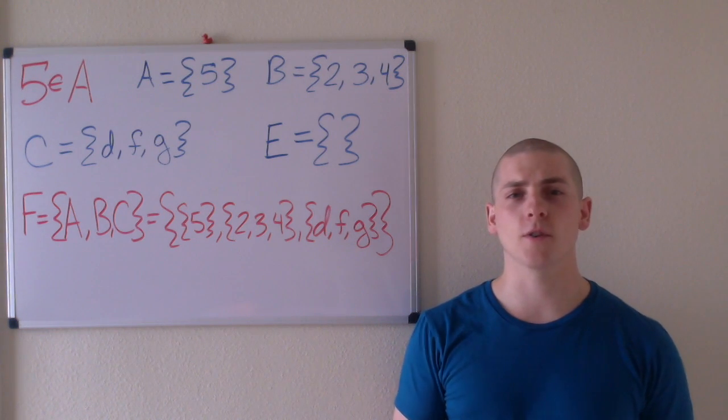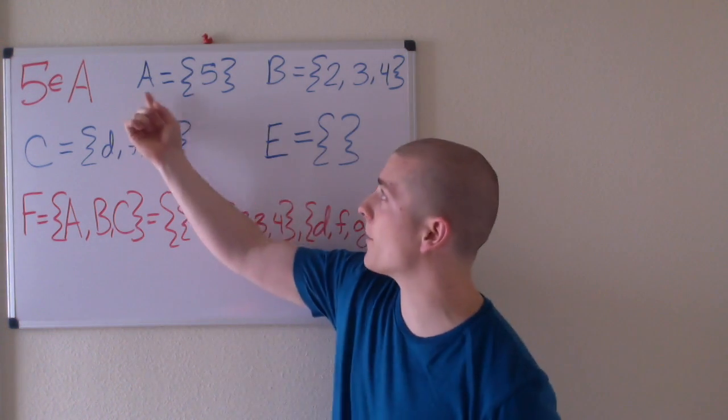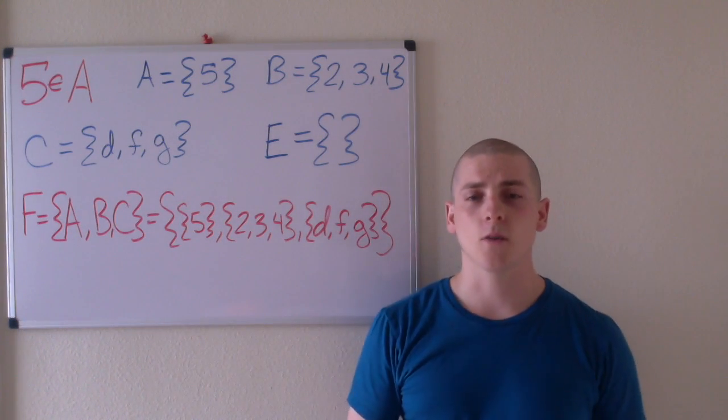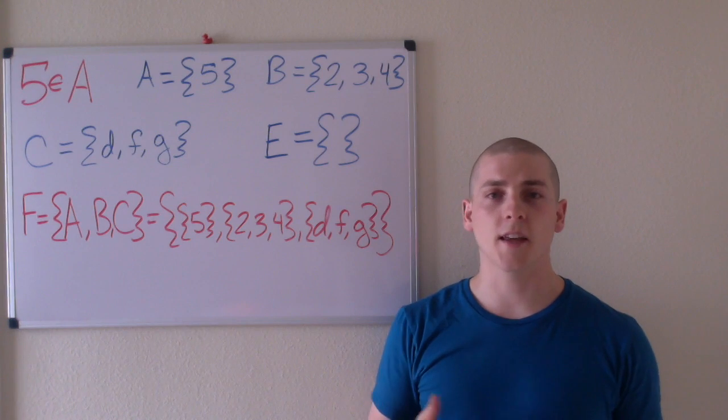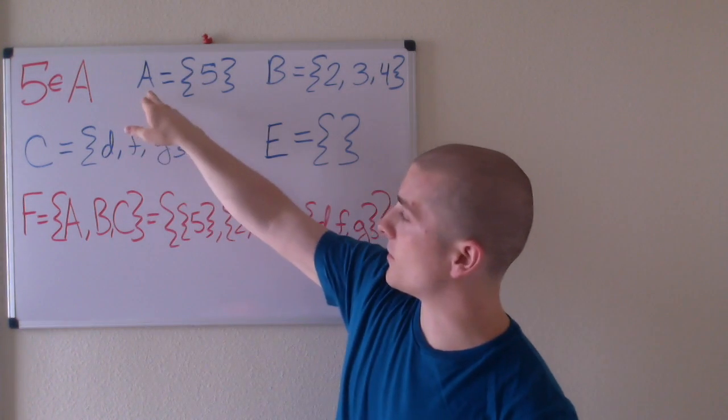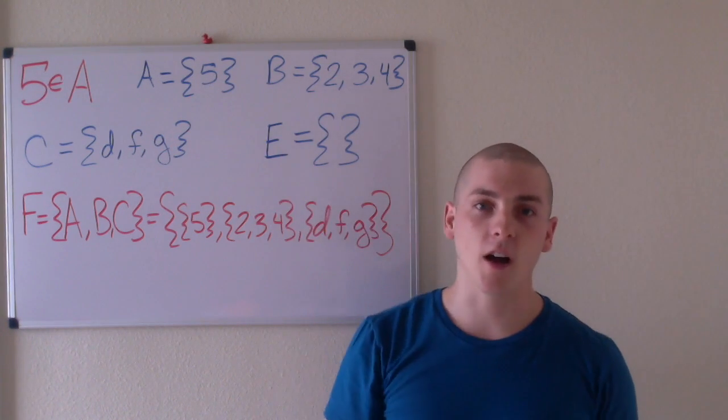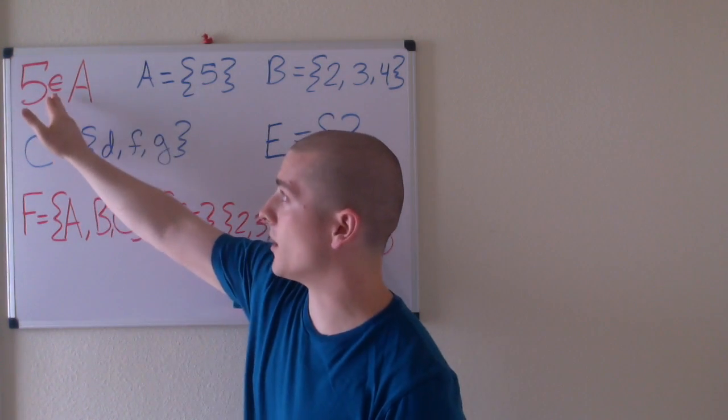Sets are usually denoted by capital letters, such as capital A, capital B, C, E, or F, and we say that the set contains elements. For example, we could say that the set A equals the set containing the element 5, or we can say that 5 is an element of A.